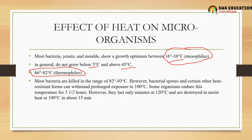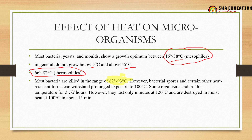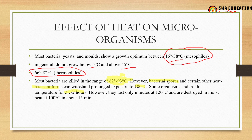Most bacteria are killed in the range of 82 to 90°C. When you subject a food produce to 100°C, most bacterial contamination can be removed. However, bacterial spores and certain heat-resistant forms can withstand prolonged exposure to 100°C — they can endure this temperature for nearly five and a half hours.